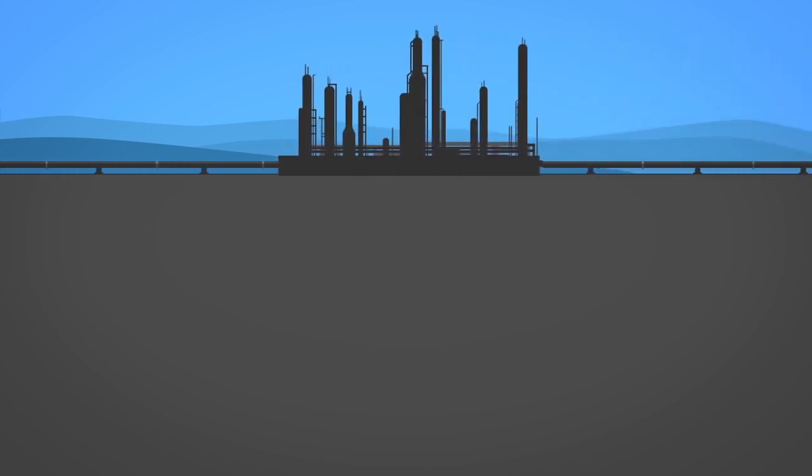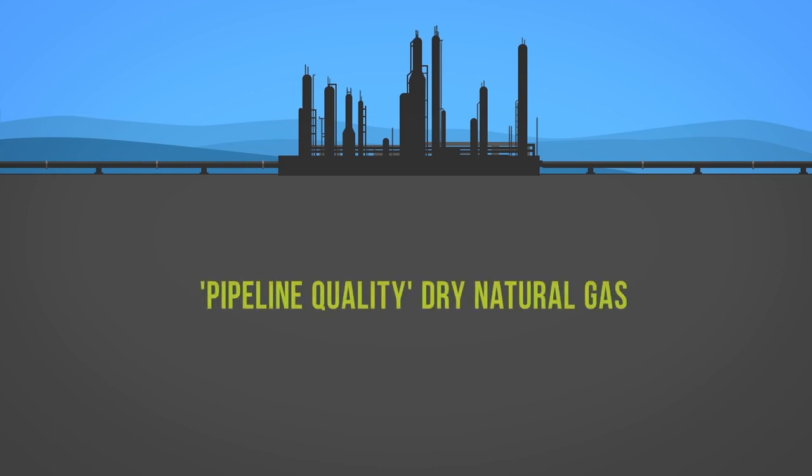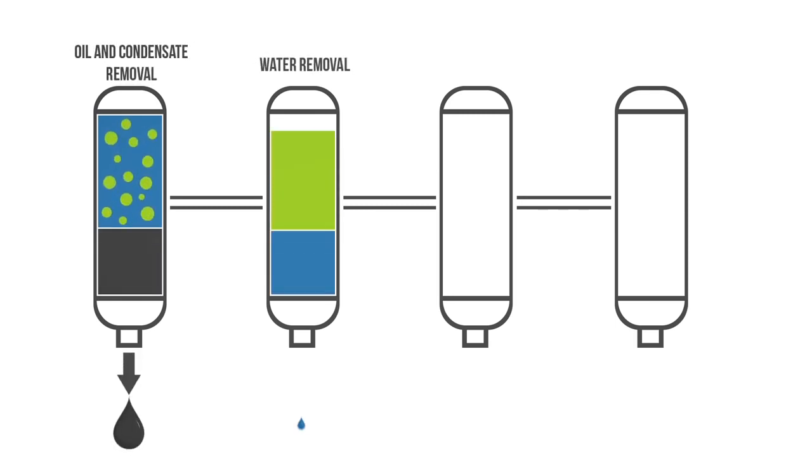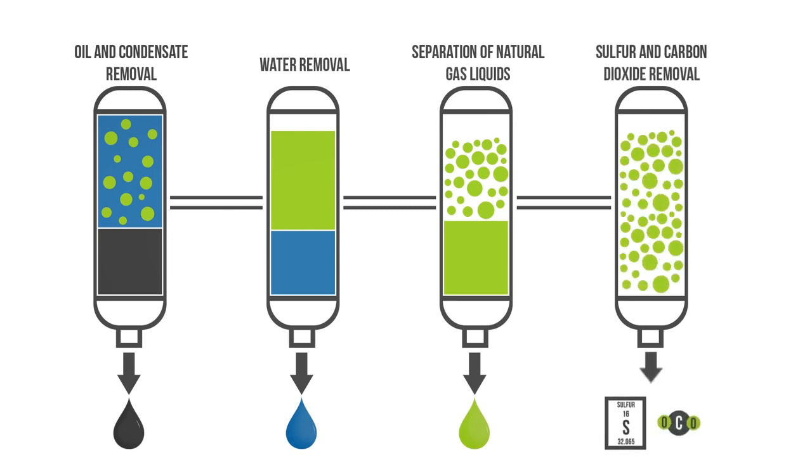which separate the various hydrocarbons and fluids from the pure natural gas to produce what is known as pipeline quality dry natural gas before it can be transported. Processing involves four main steps to remove the various impurities: oil and condensate removal, water removal, separation of natural gas liquids, and sulfur and carbon dioxide removal.